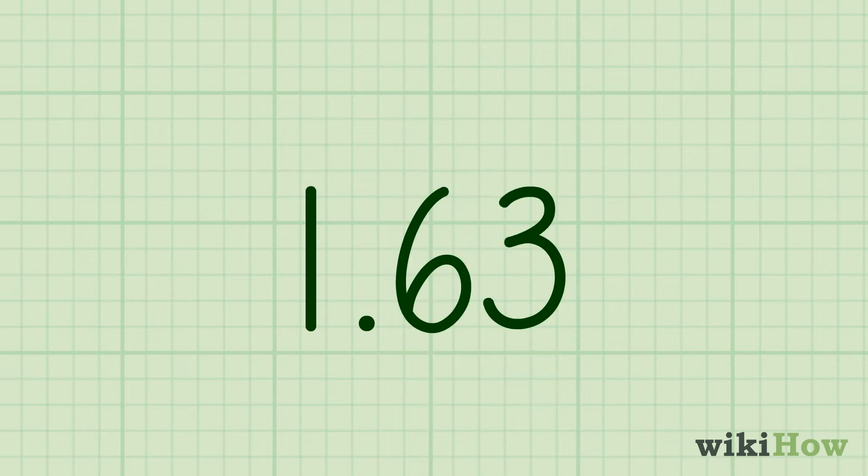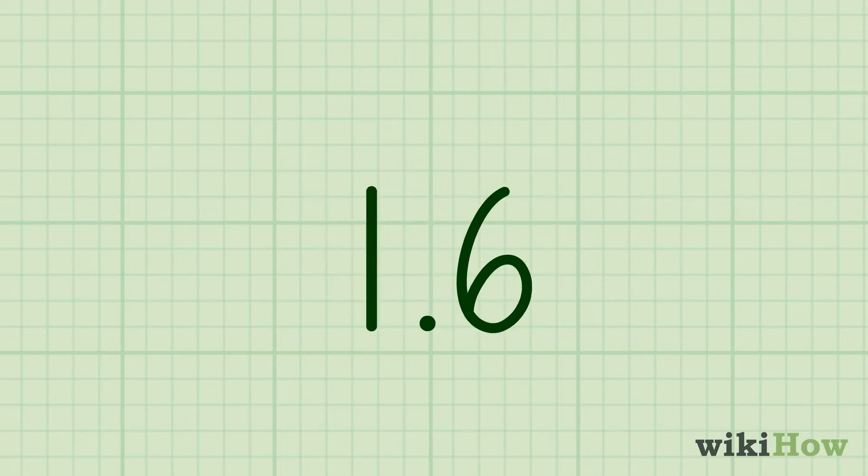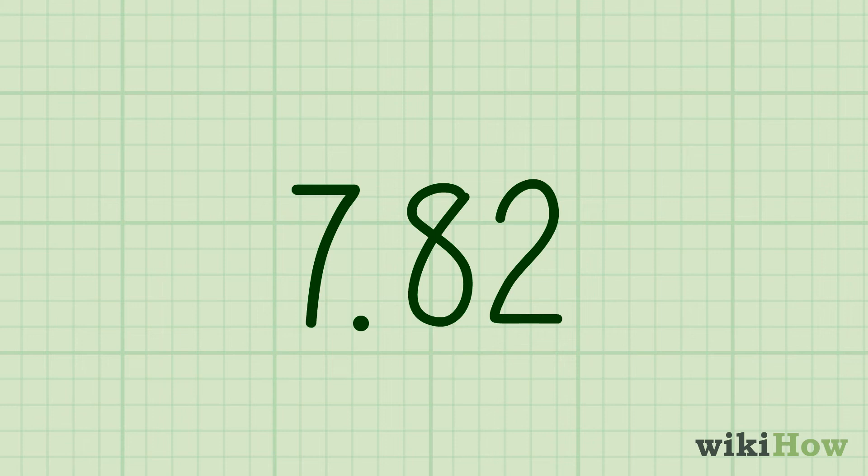If it's less than 5, round down and keep the number in the tenths place the same. In our example of 7.82, you would round down to 7.8.